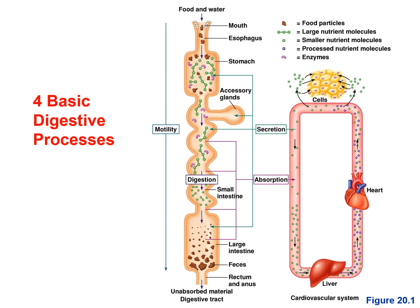This picture shows the four basic digestive processes. What I really want you to pay attention to is that when you absorb the nutrients and they go into the bloodstream, most of the nutrients are first going to go to the liver. The liver is going to have a lot to do with processing the nutrients, and then the liver will send those nutrients out to the rest of the cells.